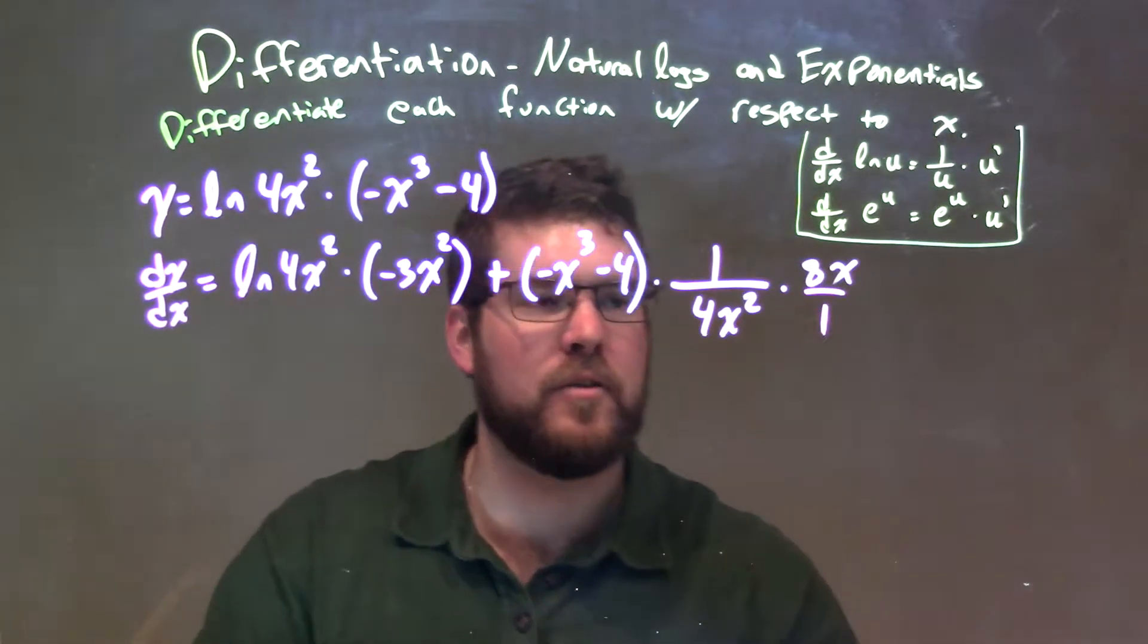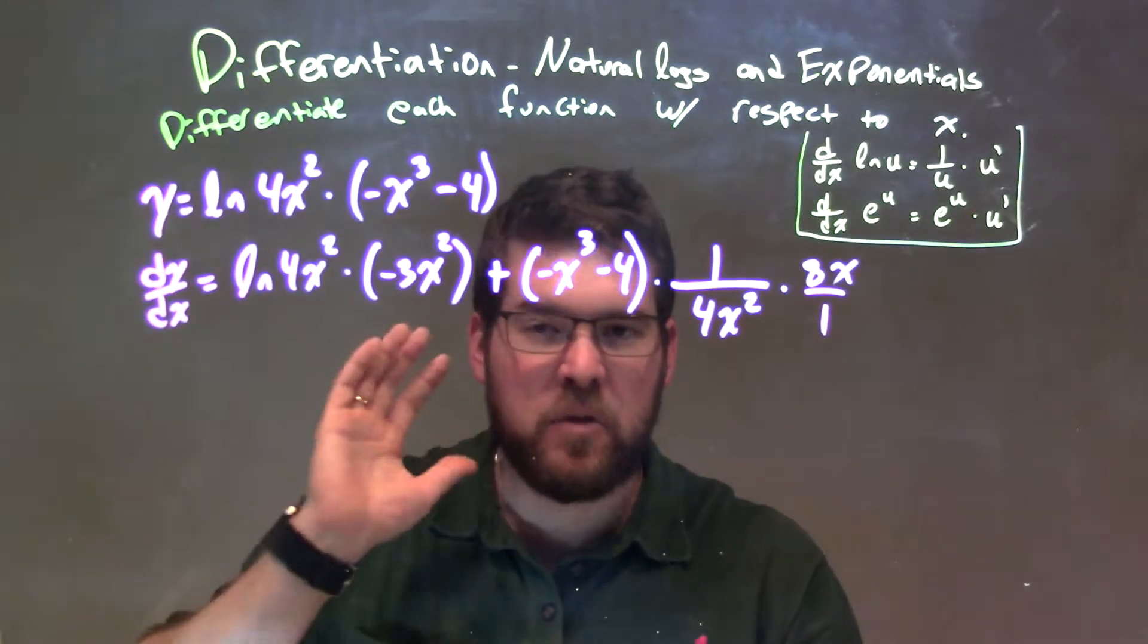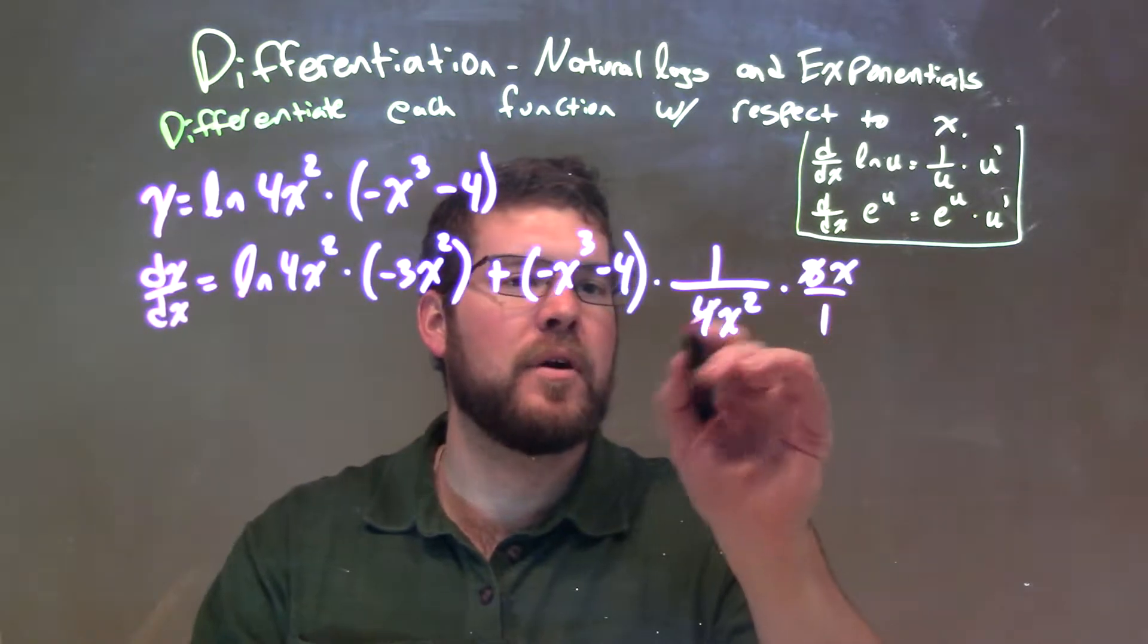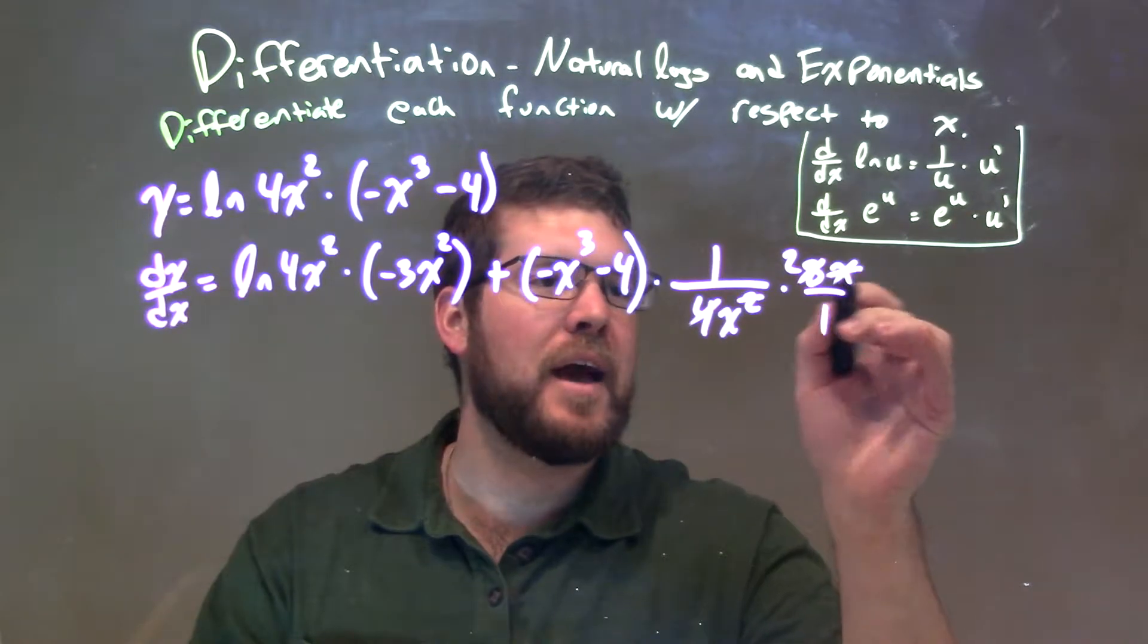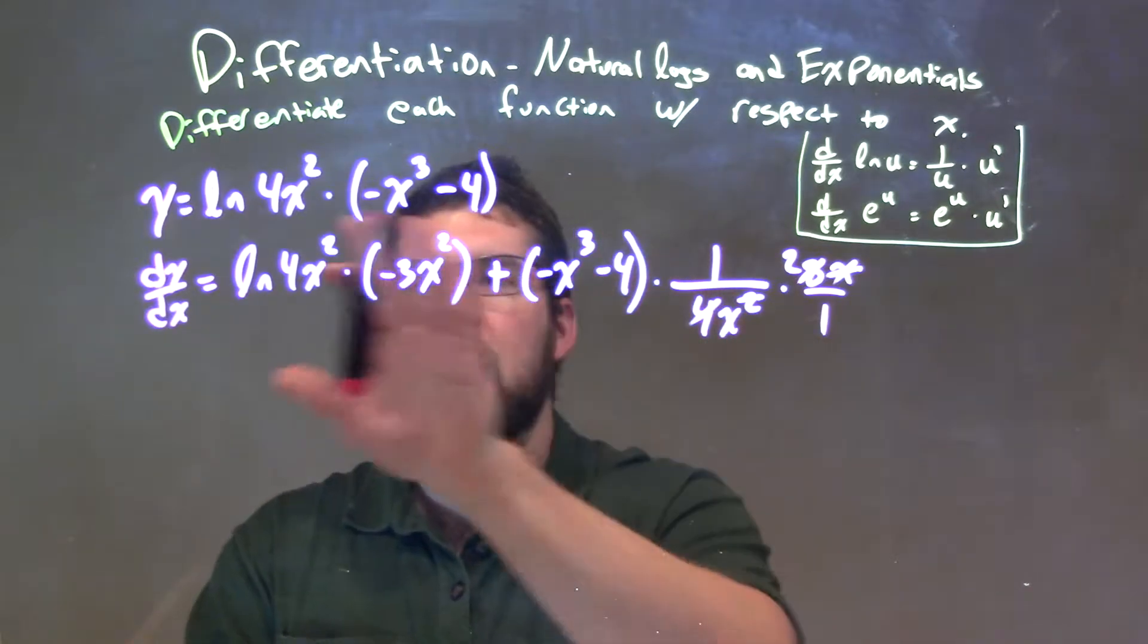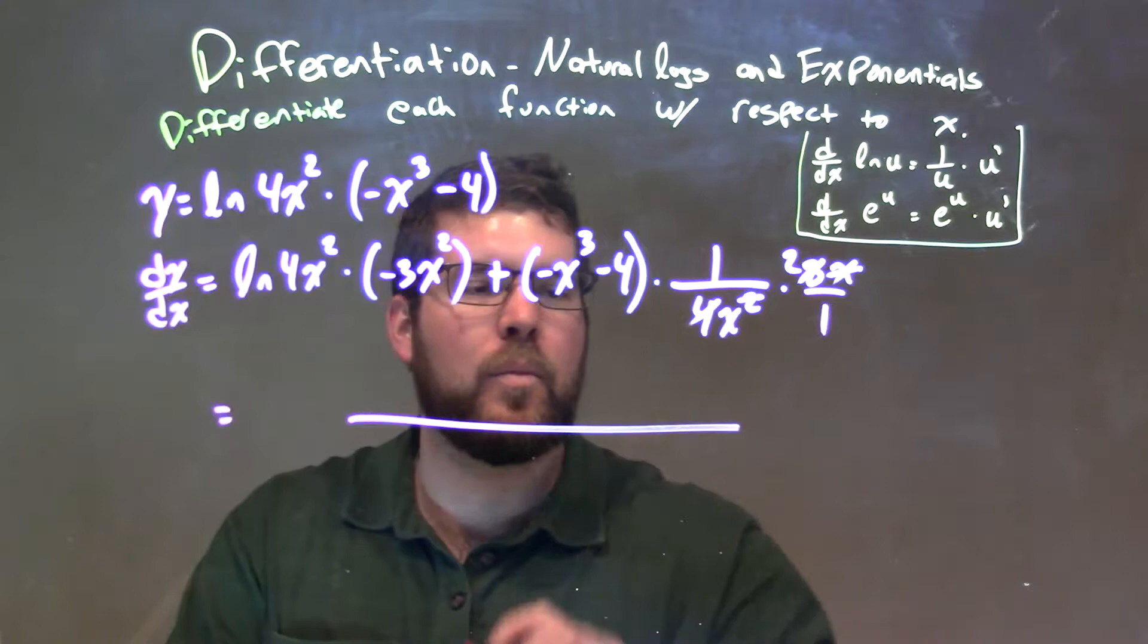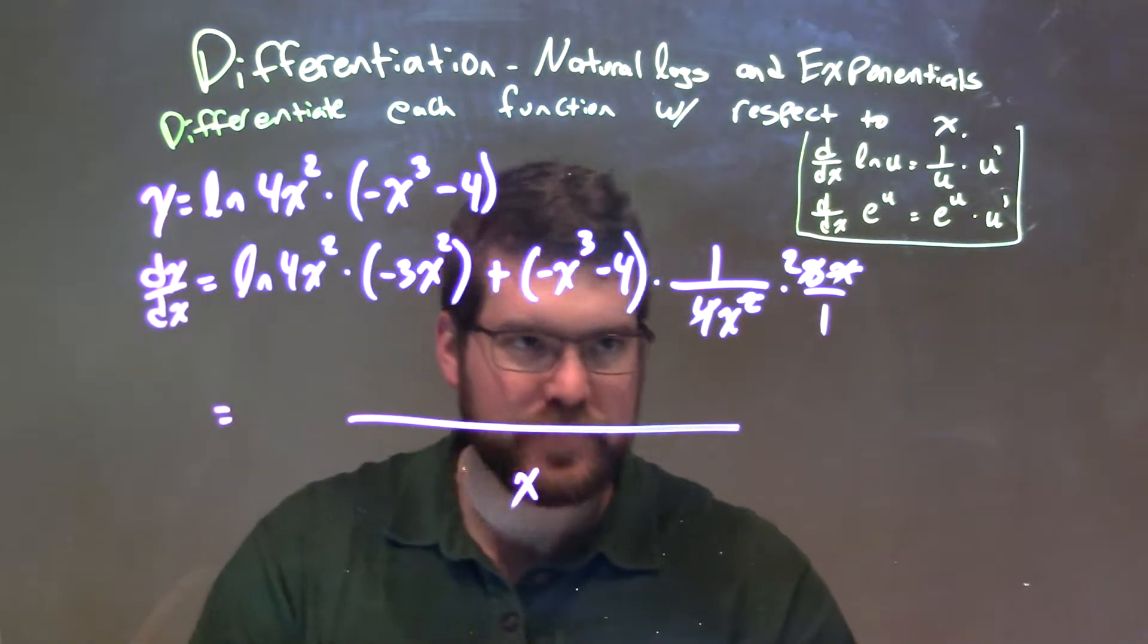We can put it over 1 if we want. So, we've taken the derivative now. Everything else from here is simplification. 8 and the 4, simplified just to be a 2, right? 4 goes into 8 2 times, and x squared and x cancel out, so we've got x down the denominator. So, we have 2 over x over here times this, and we have that top side over here. Let's try to make it one big fraction here over x.